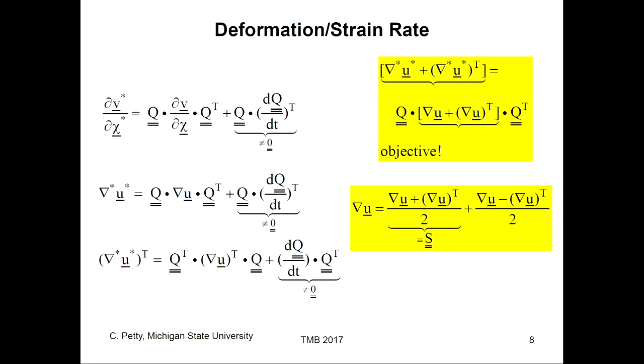The velocity gradient is not an objective property of the motion — the relationship between the velocity gradient in one frame and the star frame has an extra factor that is not zero. However, the symmetric part of the velocity gradient is objective, and you can prove that theoretically. That's not an assumption; it's simply true.